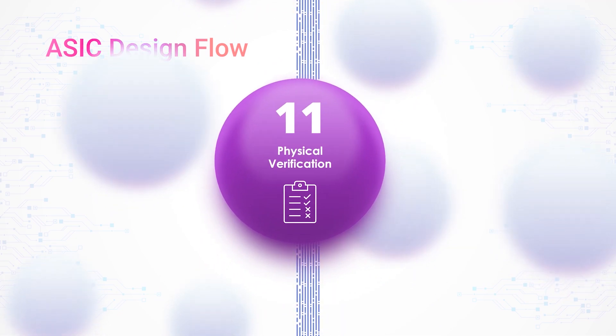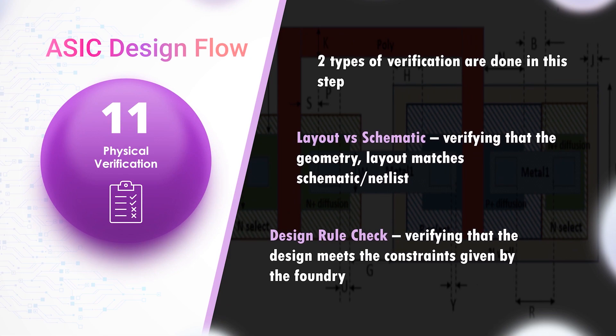Physical Verification: In this step, two checks are done, also known as sign-off checks. The first is Layout vs. Schematic, in which it is verified whether the geometry layout matches the schematic or the netlist. The second is Design Rule Check, the most important check in this step, where it is verified that the design meets the constraints given by the foundry.